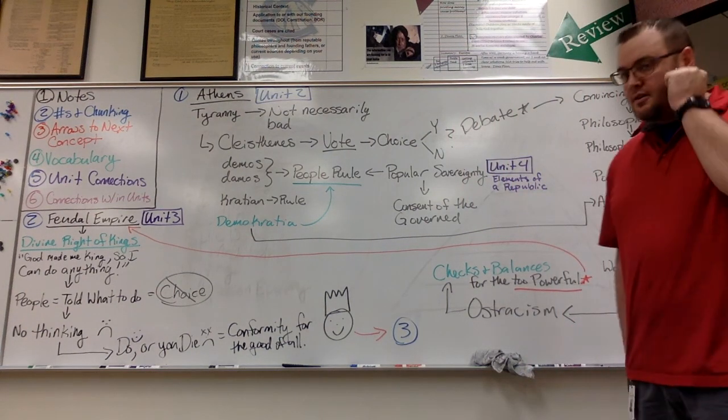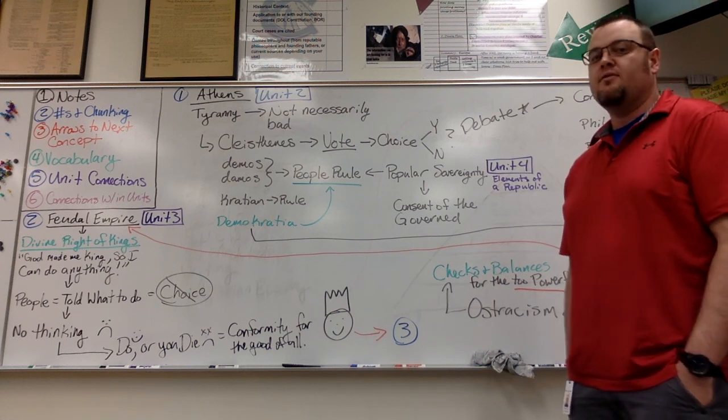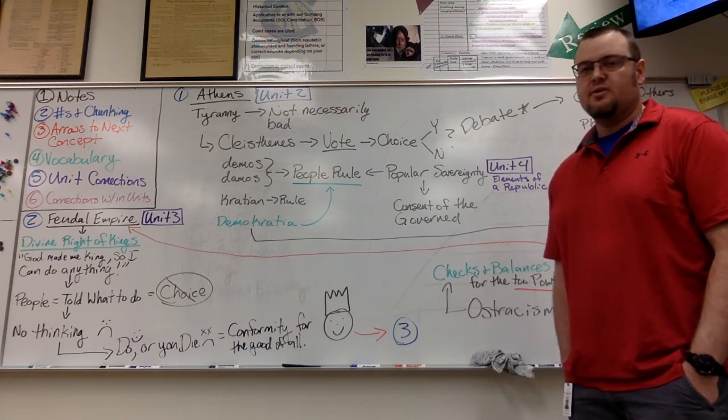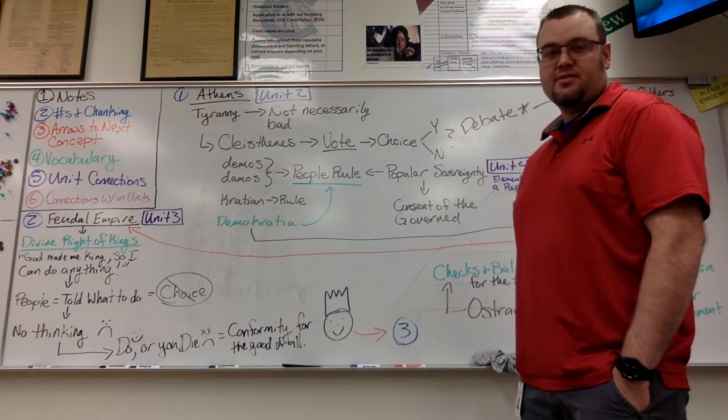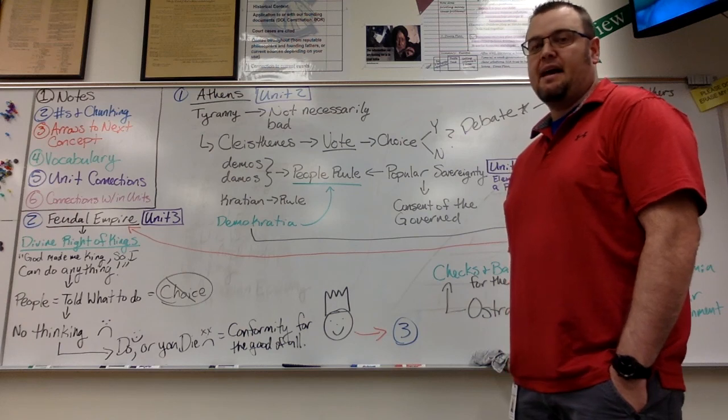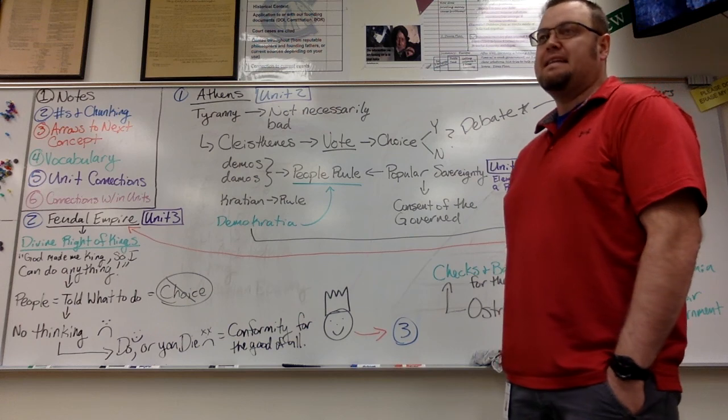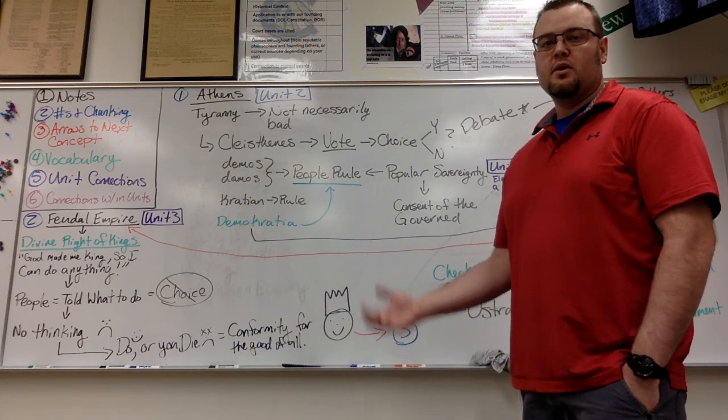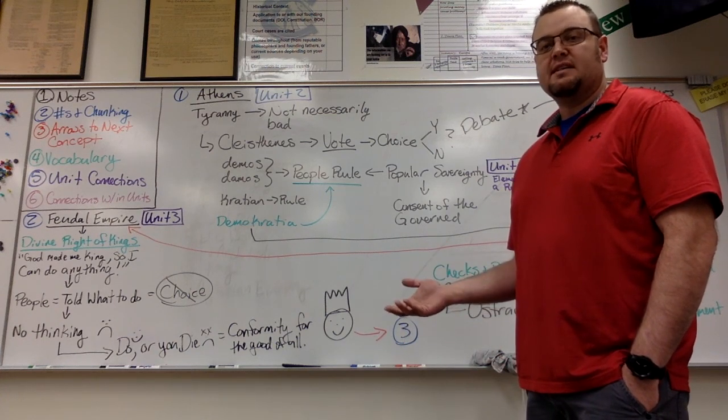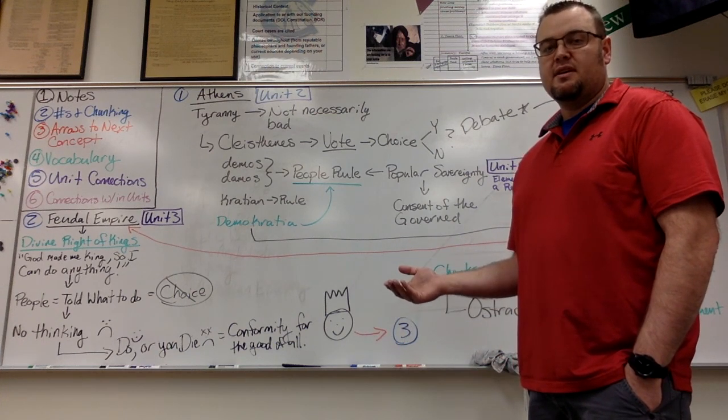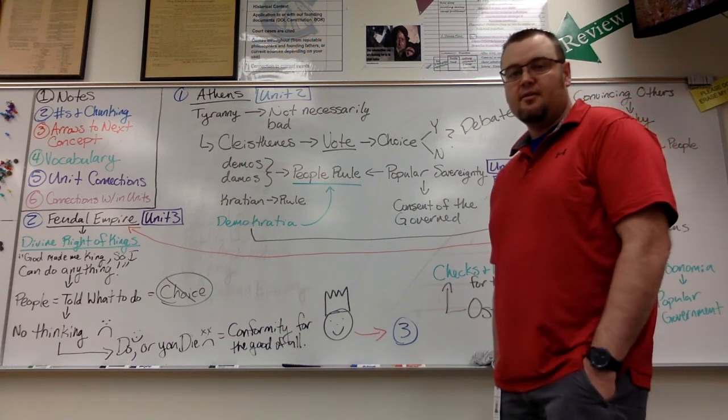To really understand what we're trying to accomplish in Unit 4 as we talk through the age of revolution, we've got to understand where we've started. To do that, we really have to start all the way back in Athens, because Athens and Rome are where we get our classical ideas about how government works, and through the Renaissance, how that's going to affect our feudal societies as we move forward into this age of revolution.